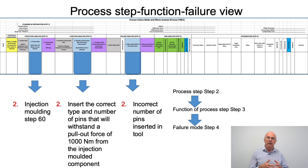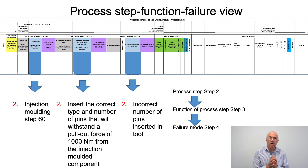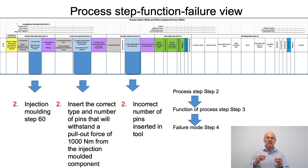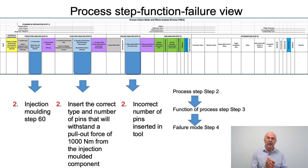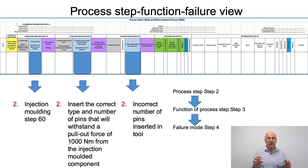Looking now at the boxes numbered two filled in at steps two, three and four — again there should be good alignment. We decided to focus on injection-moulding step 60. What are we trying to do at step 60? We're trying to insert the correct number and type of pins that will withstand a pull-out force of 1,000 newton meters from the injection-molded component. The potential failure mode is that the incorrect number of pins have been inserted into the tool — giving alignment between the process step, its function, and the potential failure mode.